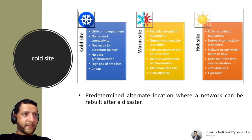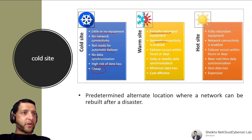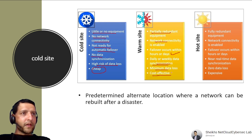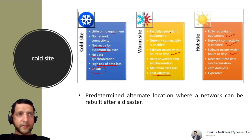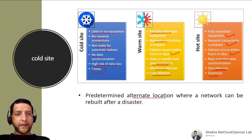Disaster Recovery Sites: A Cold Site has little or no equipment, no network connectivity, no data synchronization, higher risk of data loss, but is cheap. A Warm Site is partially equipped with network connectivity, failover within hours or days, daily/weekly data synchronization, and minimum data loss — cost effective. A Hot Site is fully equipped with network connectivity, near real-time data synchronization, zero data loss, but very expensive. The choice depends on your RTO, RPO, WRT, MTD, and MTTR requirements.